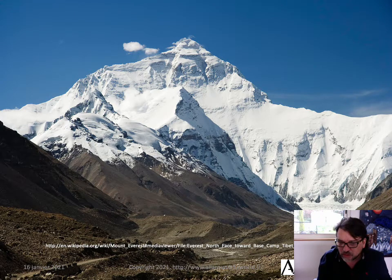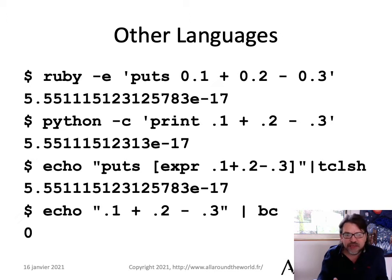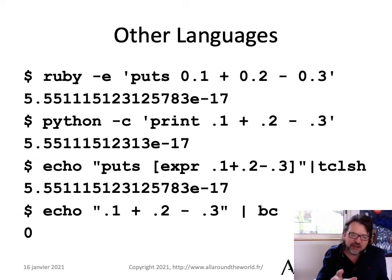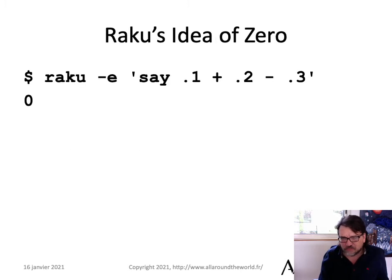What do other languages say? They mostly say the same thing — Ruby, Python, Tcl. BC actually gets this correct for some reason buried in their documentation. What does Raku say? Zero.